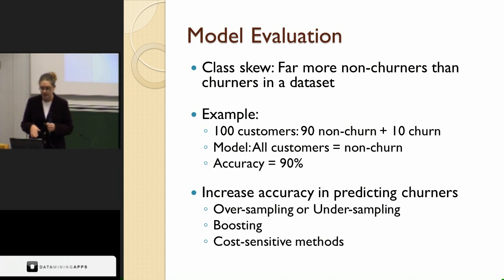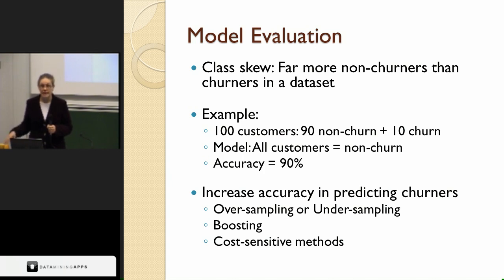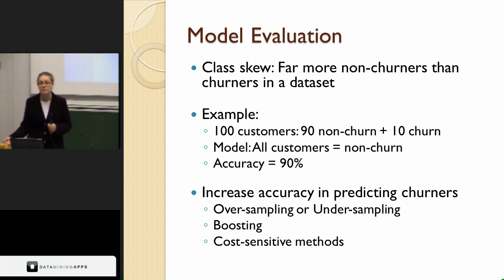In churn prediction, you want to increase accuracy in predicting specifically the churners, even if that means being less accurate in predicting non-churners — since predicting a non-churner means you do nothing. You want to focus on the minority class, the churners. You can over-sample churners or under-sample non-churners in your dataset to get a more balanced set. You can also do boosting or use cost-sensitive methods, which take into account the different costs of misclassifying a churner versus a non-churner.